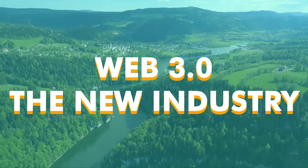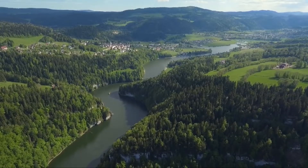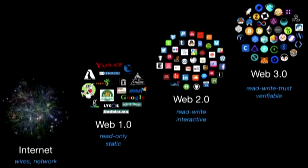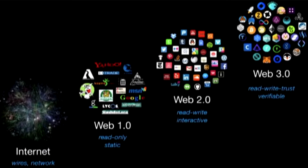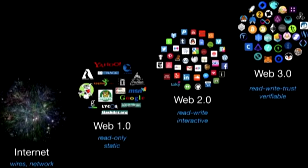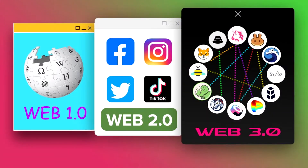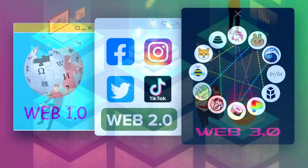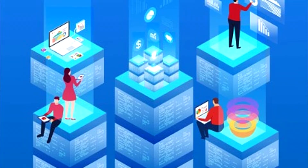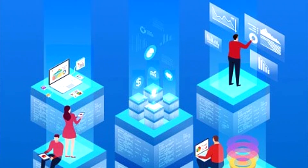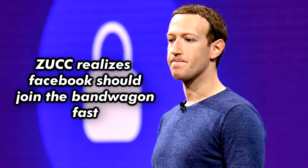Web 3.0 is the transformation of ownership of data from corporations and centralized databases to data that is shared with everyone and controlled by the users themselves. Of course, this includes the blockchain — transmitting data and making sure that it is fully decentralized and not controlled by any one entity.